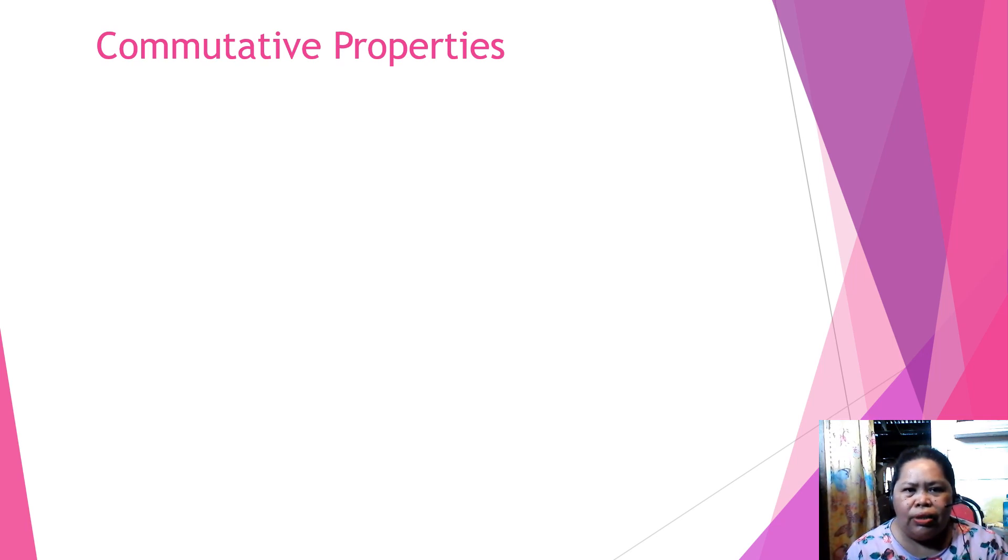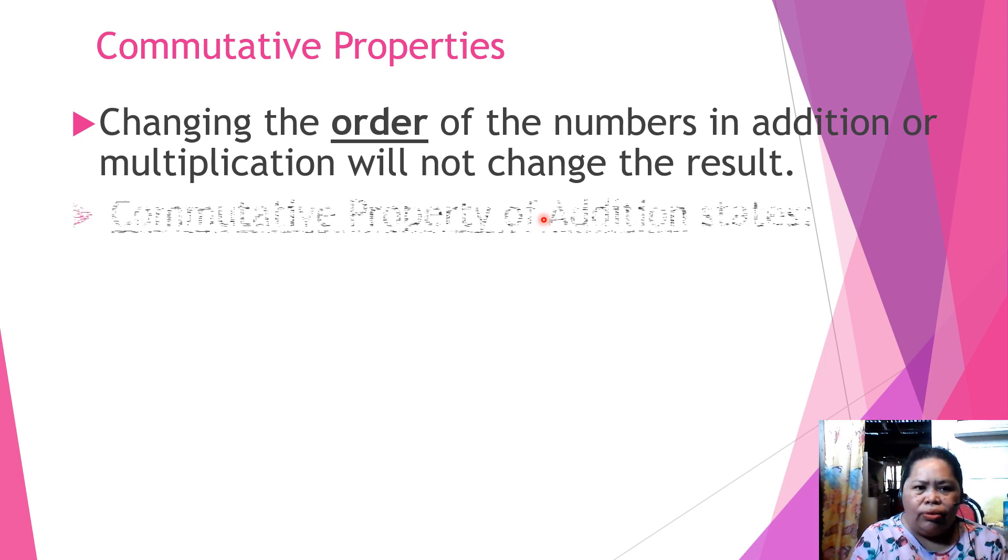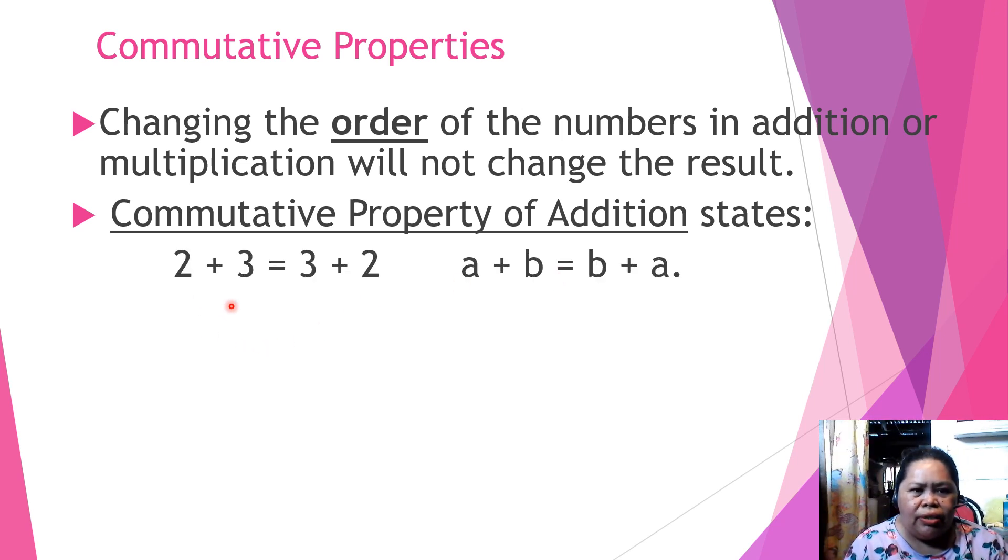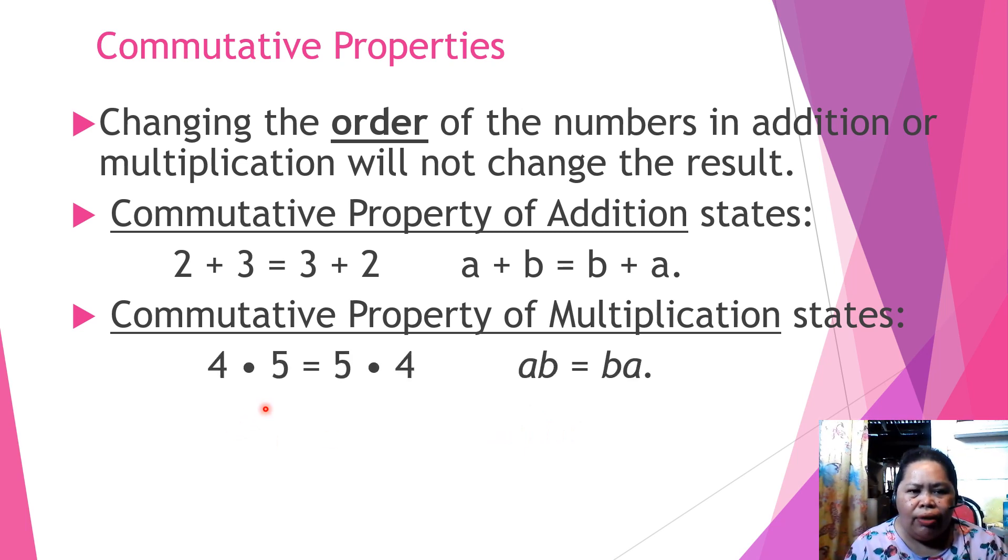First we need to discuss about commutative properties. Changing the order of the numbers in addition or multiplication will not change the result. Commutative property of addition states that 2 plus 3 is equal to 3 plus 2, or A plus B is equal to B plus A. Commutative property of multiplication states that 4 times 5 equals 5 times 4, or A times B is equal to B times A.